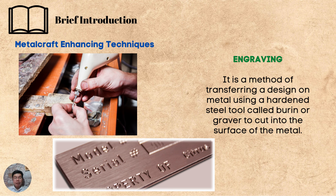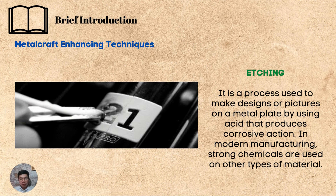These are the metal craft enhancing techniques. We have engraving — it is a method of transferring a design on metal using a hardened steel tool called burin or graver to cut into the surface of the metal. Yung mga alahas, especially yung mga singsing, mga wedding rings, yan yung ginagawa — ina-engrave yung mga pangalan doon sa likod ng singsing. Etching is a process used to make designs or pictures on a metal plate by using acid that produces corrosive action. In modern manufacturing, strong chemicals are used on other types of material.